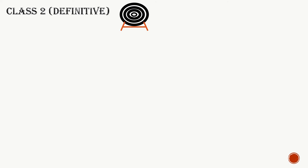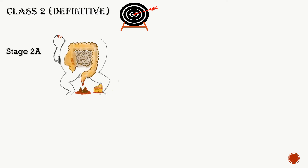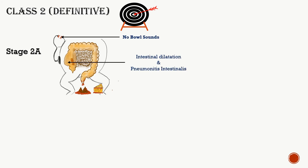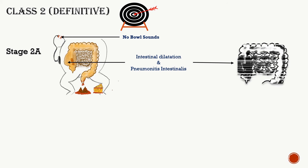Class 2 is called 'definitive' because the signs and symptoms here pinpointly indicate the disease, helping the clinician make a definitive diagnosis. Stage 2a contains all the features of stage 1b along with absent bowel sounds and intestinal dilatation. This dilatation is due to accumulation of gas from bacterial proliferation in the gut. On x-ray, we see gas in the gut as pneumatosis intestinalis, which is the hallmark of necrotizing enterocolitis.